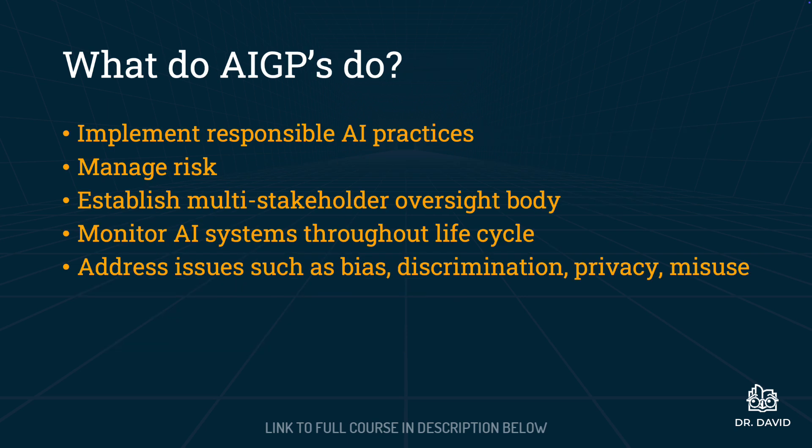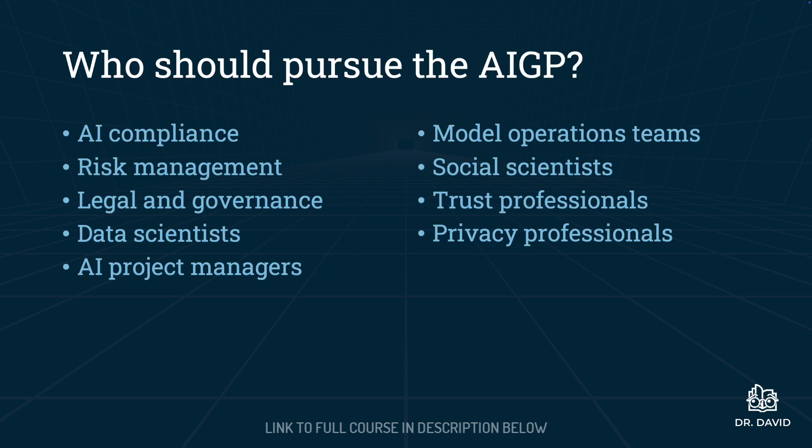AI governance professionals implement responsible AI practices. These include managing risk, establishing multi-stakeholder oversight bodies, monitoring AI systems throughout their lifecycle, and addressing issues such as bias, discrimination, privacy, and misuse.